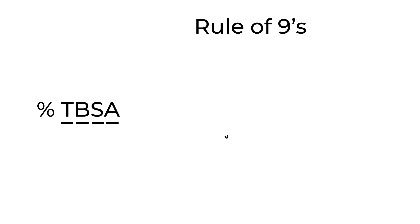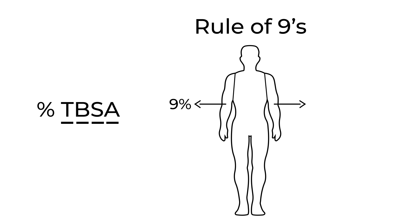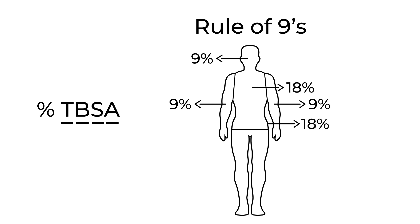I'll draw a quick diagram illustrating the body parts and explain what each rule of nines percentage is. For each arm involved, it's 9%. If the head and neck are involved, that's another 9%. The anterior trunk is 18%, the posterior trunk is another 18%, and each leg is 18%.